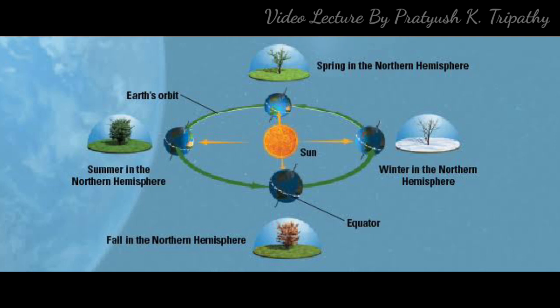When it is summer in the northern hemisphere, it is inclined towards the sun and the south pole is away. Hence, the southern hemisphere experiences winter. Similarly, during winter the north pole is away from the sun and the south pole is inclined towards it. Hence, it is summer in the southern hemisphere.